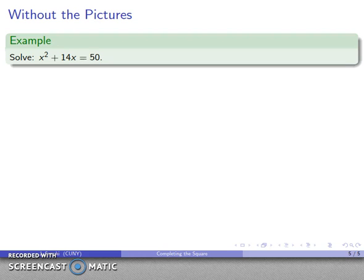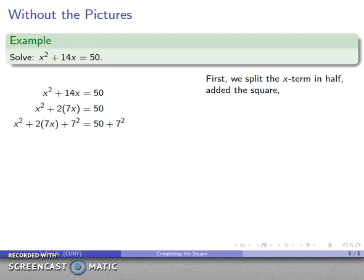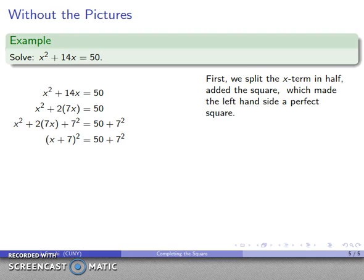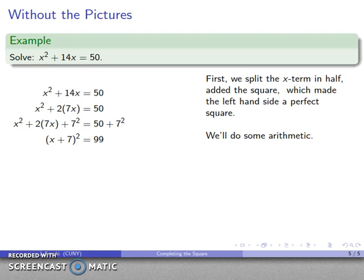So here's my equation, x squared plus 14x equals 50. And again, if we go through our process of what we did, we split the x coefficient in half, we squared it, we added the squares, we did a little bit of arithmetic. Over on the left-hand side, we have a perfect square, x squared plus 7 squared. Over on the right-hand side, we have something we can do arithmetic on. I take the square root of both sides, plus or minus because I'm living in algebra land. And then I'm going to subtract that 7, and I end up with my two solutions.